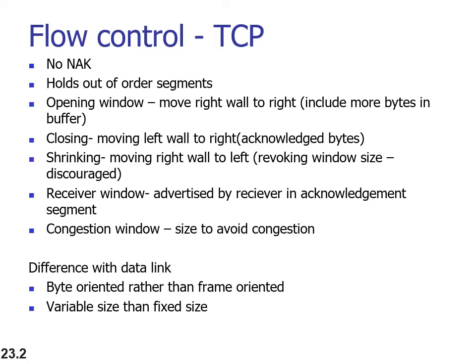These slides are from 'Data Communication and Networks' by Forouzan. In TCP flow control, unlike selective repeat protocol, there is no negative acknowledgement. Instead, we send an acknowledgement for the next segment expected. TCP is a byte-oriented protocol and the sequence number is the number of the next byte to be received, and acknowledgement is the next byte expected.